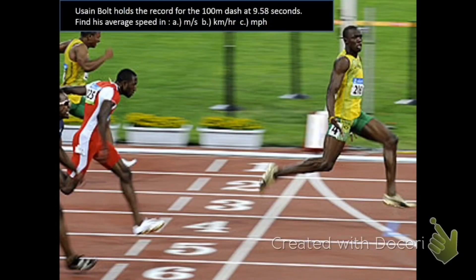All right, and finally, let's do a sample problem. Usain Bolt is actually the record holder for the 100-meter dash, and his fastest time was 9.58 seconds. So now we're going to calculate his speed in meters per second, kilometers per hour, and miles per hour.